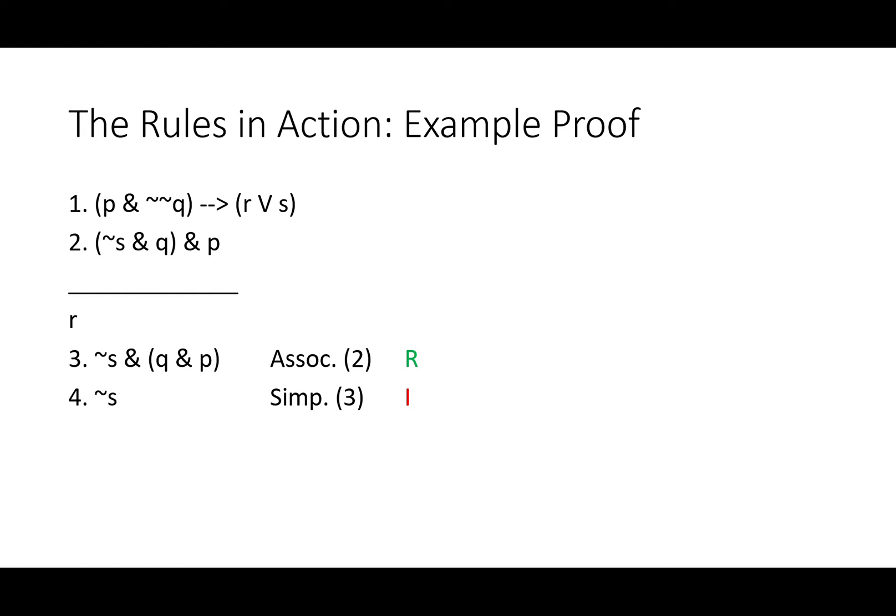Instead, we'll just do simplification. You can't do simplification to a partial line, so we wouldn't be able to do it to line two to get not S. We could only get P. That's why we had to do associativity first. Those parentheses prevented us from using simplification when we wanted to. Notice that not S shows up in both. Simplification functions just like scribbling out Q and P. As this is a rule of inference, it's logically entailed. Line three leads directly to line four. We applied it only to a whole line. That's why we couldn't apply it to line two. And it can be applied only in one direction.